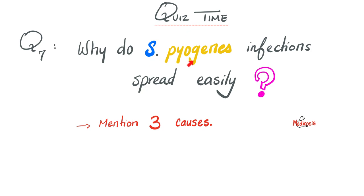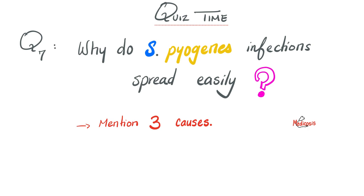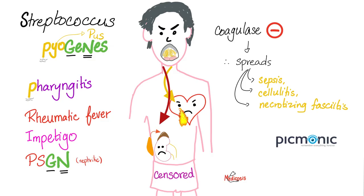Quiz time: why do Streptococcus pyogenes infections spread easily? Please mention three reasons. We talked about the different types of streptococci before — please pause and review.